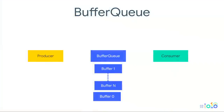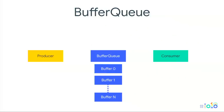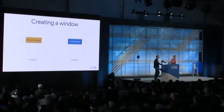It's a simple concept, though the code is complicated in part because the two endpoints of a buffer queue can live in different processes. This is exactly how our surface compositor works. When you create a window, you have the window manager as the producer and SurfaceFlinger as the consumer. When you call WindowManager.addView — done automatically when you create a dialog, a toast, or an activity — we internally create a window object. That window has a sibling on the SurfaceFlinger side called a layer.